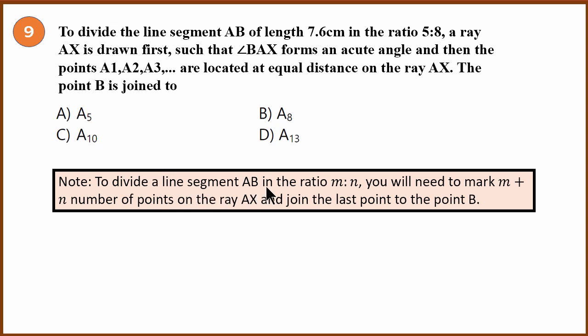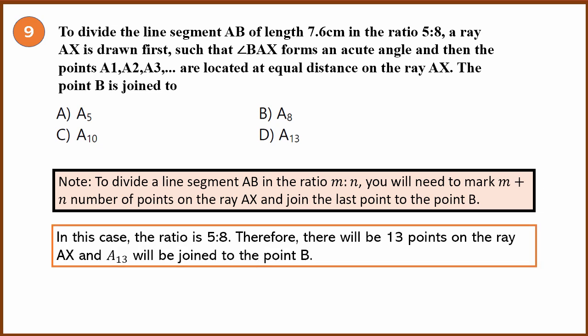To divide a line segment AB in the ratio M is to N, we need to first mark M plus N number of points on the ray AX and then join the last point to the point B. M plus N, in the ratio 5 is to 8, M plus N will be 13 points.